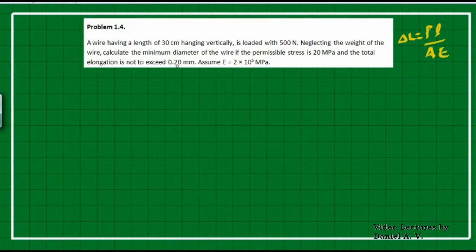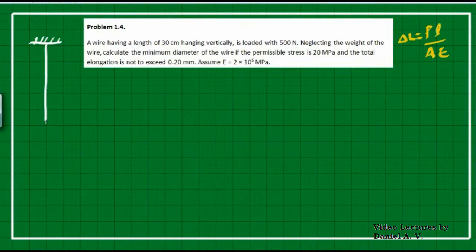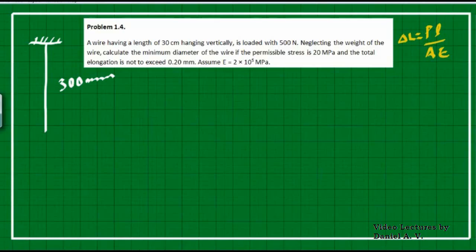Let's plot what is described. There is a wire hanging vertically down, having a length of 300 mm. A weight of 500 Newton is attached at the base.